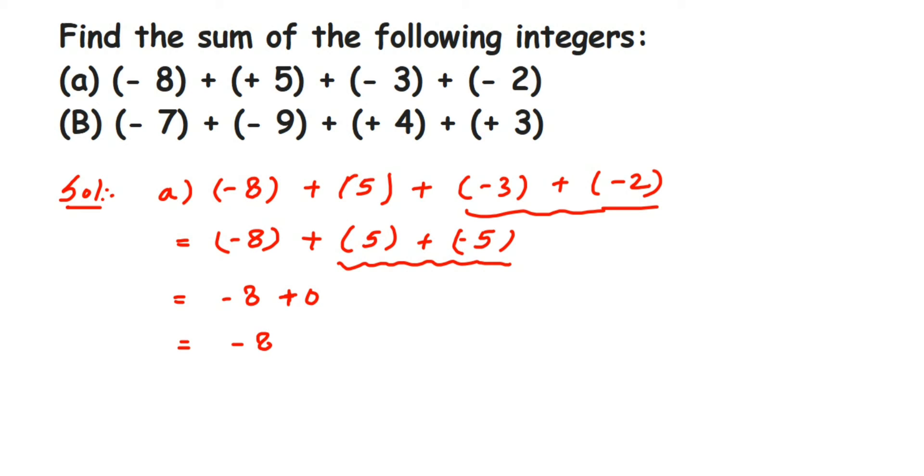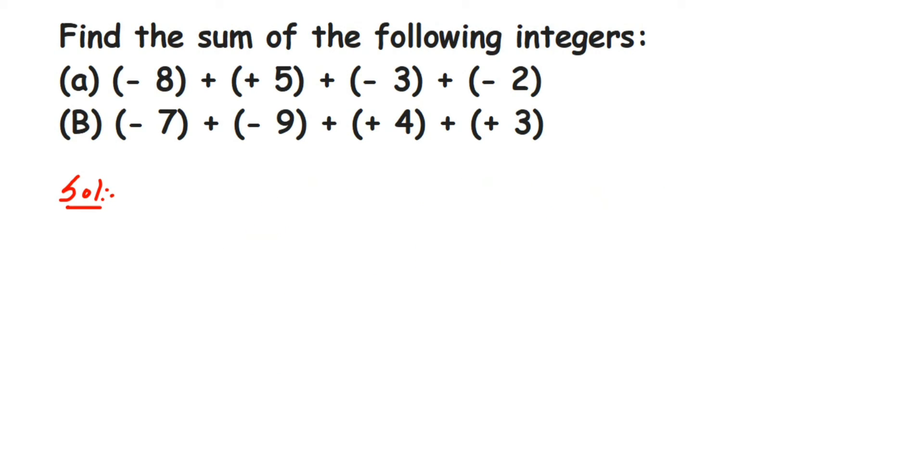So this is the first question answer we got, let's go for the next one. Now in the second one we have (-7) + (-9) + 4 + 3. Again I'm going to go with the right side. The first two integers I'm not going to touch.